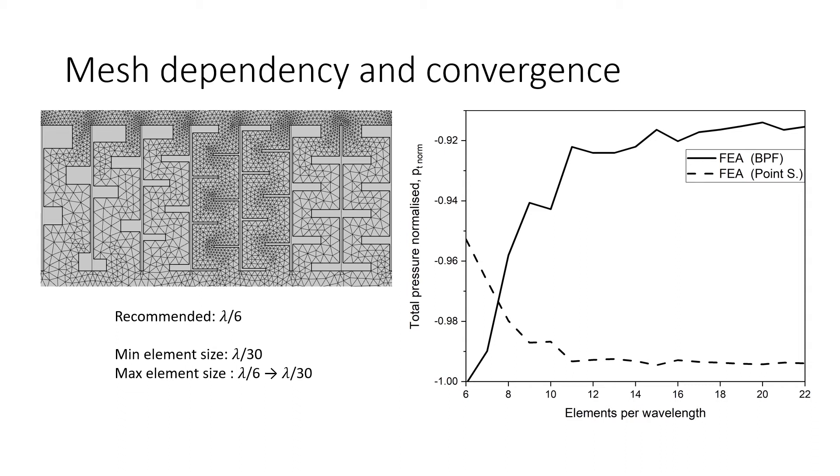The effect of the maximum element size on the total acoustic pressure at the point of interest is shown on the right. You can see that increasing from 6 to 20 elements per wavelength only resulted in a small change of 0.08. Closer inspection indicates that the numerical solution has converged with a maximum element size of 18 elements per wavelength. Therefore the results obtained with a maximum element size of 18 elements per wavelength and beyond is more reliable.